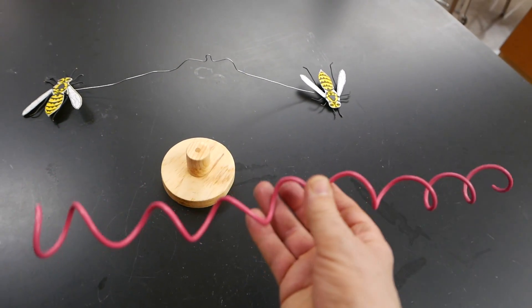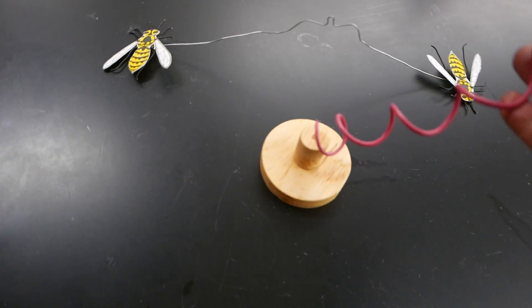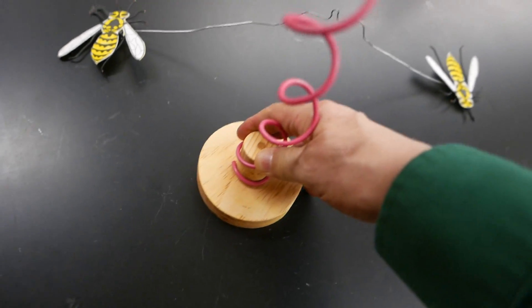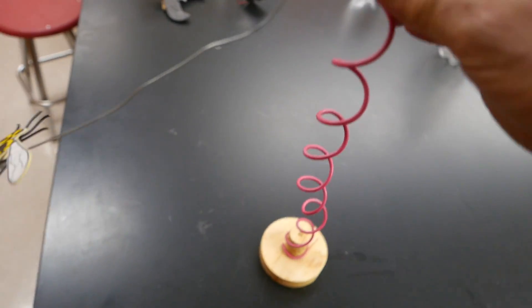This coil was made with 10 gauge copper wire. It's fairly flexible, and it was easy to make. I simply wrapped it around a piece of PVC pipe. I attached it to the wooden base, and then kept stretching that coil until I finally got the bees to turn.